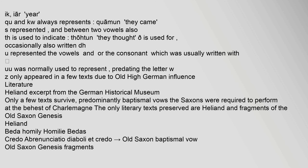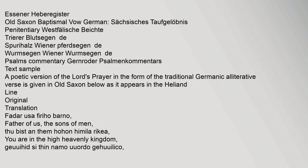Only a few Old Saxon texts survive, predominantly baptismal vows that the Saxons were required to perform at the behest of Charlemagne. The only literary texts preserved are the Heliand and fragments of the Old Saxon Genesis. Other surviving texts include the Heliand Beta Homily, the Old Saxon Baptismal Vow, the Essener Heberegister, and various penitentiaries and psalm commentaries.